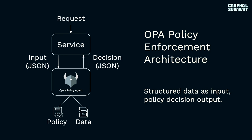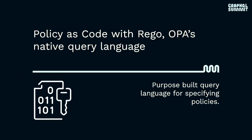Let's look at an example of how a typical application might use Open Policy Agent. This is just a typical request processing application. A request arrives at the service; the service collects some input — the input required by the policy. That input is sent to Open Policy Agent. Open Policy Agent makes the policy decision — the authorization decision — and returns that decision as structured output as JSON. Let's dig into that and look at an example of Rego, which is the name of the policy language that ships with OPA. It's a purpose-built language meant for specifying policies.